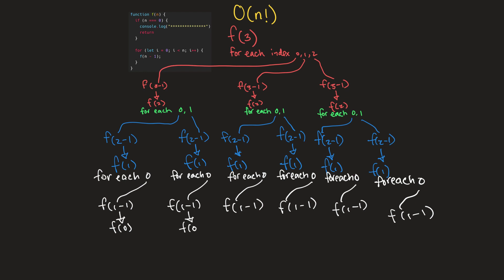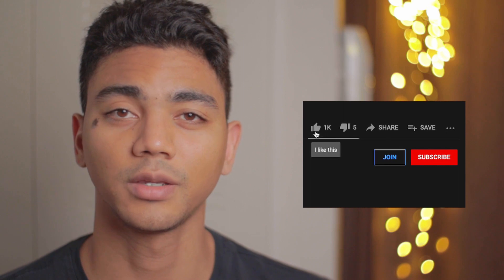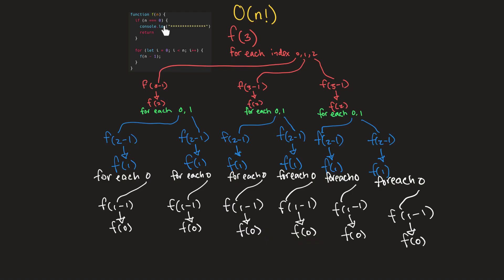So we're going to be passing zero as our n to the function. If we remember up in the actual function, our base case is: if n is equal to zero, then we're just going to console log and then return. So for each one of these calls to the recursive function, we're going to perform this console log code. And after we perform this console log code, we're going to return — so this entire function will be finished, because all of these are going to return.